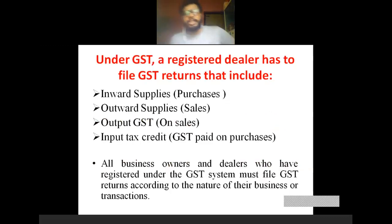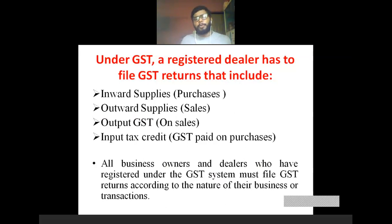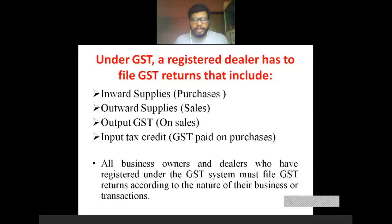Under GST, a registered dealer has to file a GST return that includes inward supplies (that is, purchases), outward supplies (that is, sales), output GST (the tax collected from the customer), and input tax credit (GST paid on purchases). All these details must be shown under GST returns.